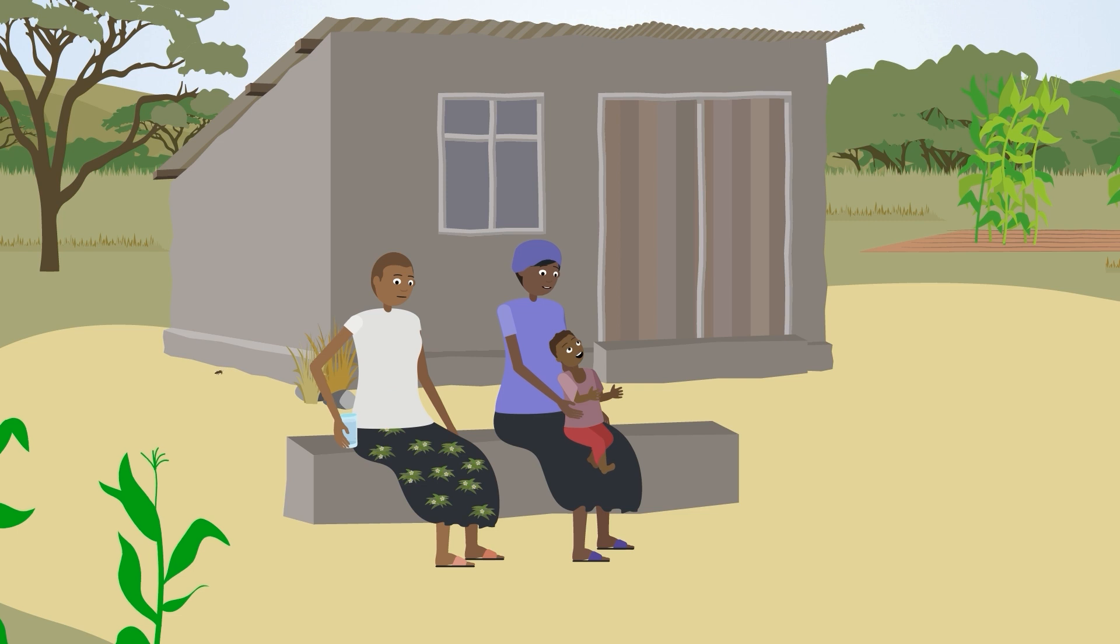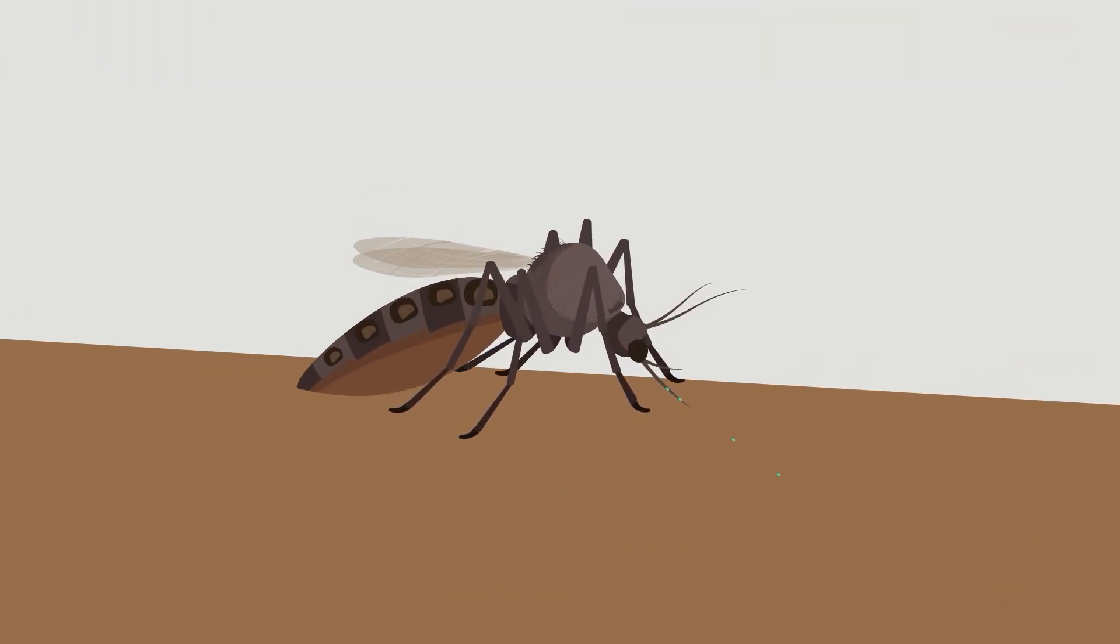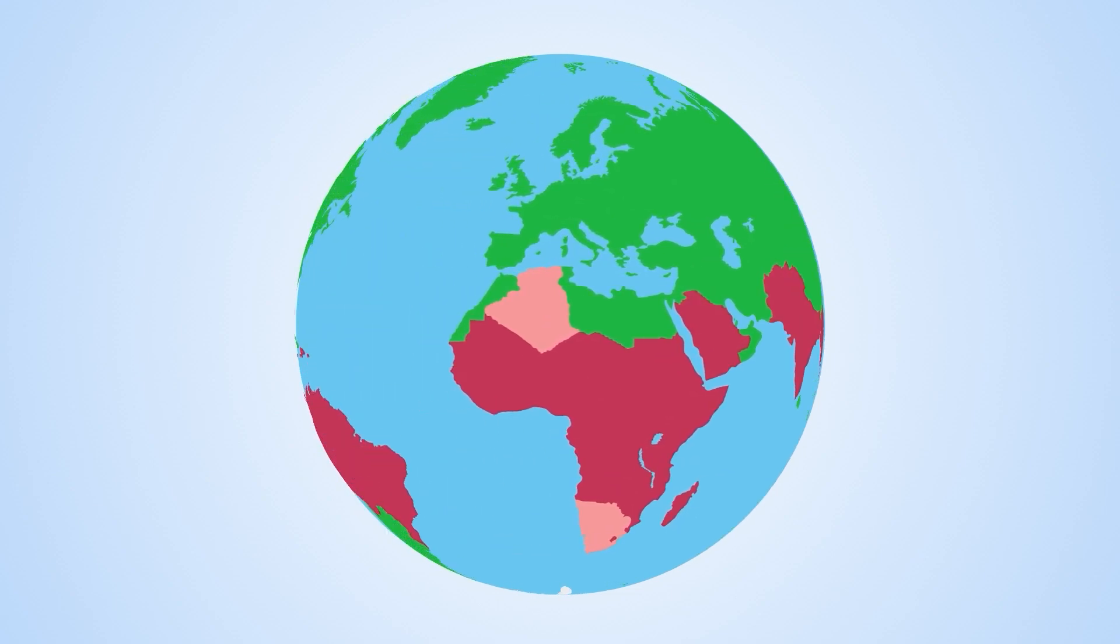Malaria is a life-threatening disease transmitted through the bite of Plasmodium-infected female Anopheles mosquitoes. It is preventable and curable. More than 3 billion people are at risk.